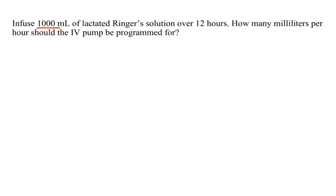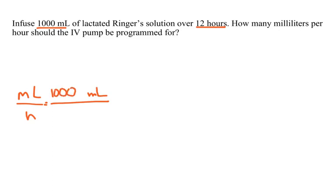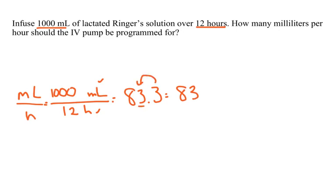Next: infuse 1,000 milliliters of lactated Ringer's solution over 12 hours. How many milliliters per hour should the IV pump be set for? I'm looking for milliliters per hour, so I start with 1,000 milliliters. The only other information is 12 hours — I started with milliliters, ended with hours — so I divide: 1,000 divided by 12 equals 83.3, which rounds to 83 milliliters per hour.